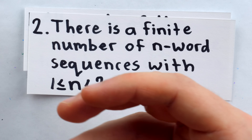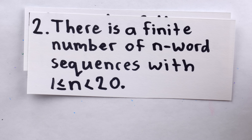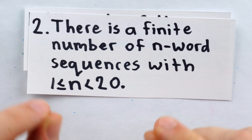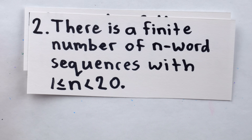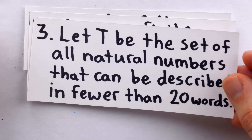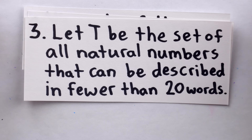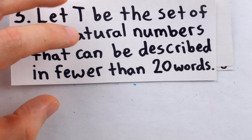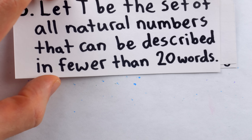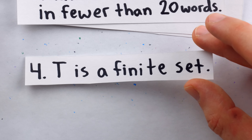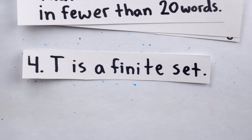Among these word sequences, most of them are nonsensical gibberish, some of them are actual sentences, and even more special, some of them are sentences which describe natural numbers like 1, 2, 3, 4, etc. So we're going to let T be the set of all natural numbers that can be described in fewer than 20 words. Since there are only so many word sequences less than 20 words long, we know that T is a finite set.